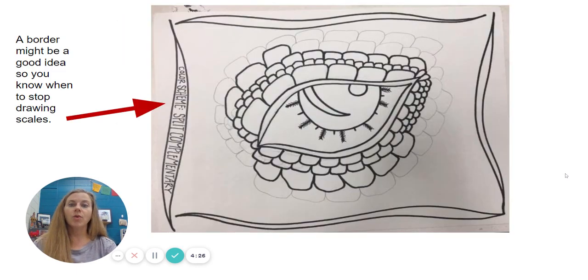Then you are going to write your color scheme somewhere. You could do it in your border like I did. You could do it on the back. I don't really care where you put it, as long as I know what you're doing. Then you can start coloring. Let's pretend that I drew my scales all the way out to my border. But that's what I meant by you can have a border to stop it.